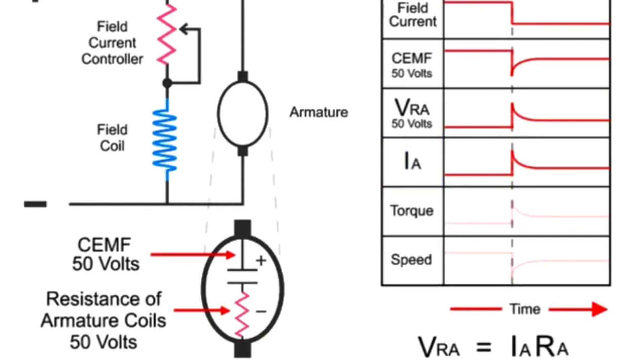Thus, the current increase in the armature strengthens the magnetic field in the armature. A subsequent torque spike leads to a gradual increase in the speed.